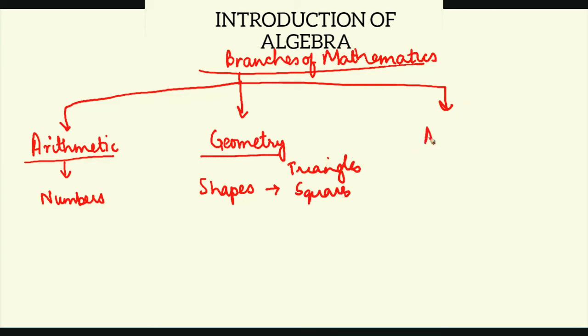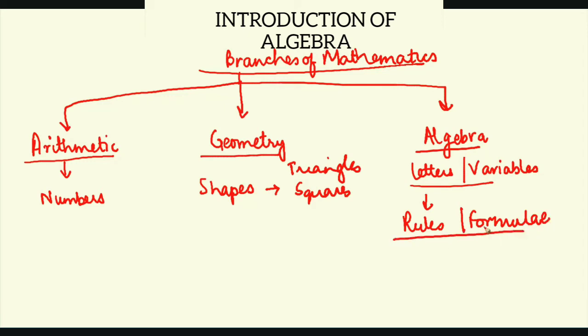The third branch which is relevant is algebra. In algebra, we study letters or variables. The idea behind learning these letters or variables is to find certain rules or formulas. These formulas basically lay down certain rules which are universal, so if one applies, others have to apply under certain circumstances.